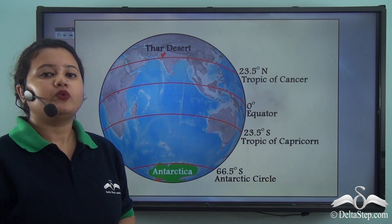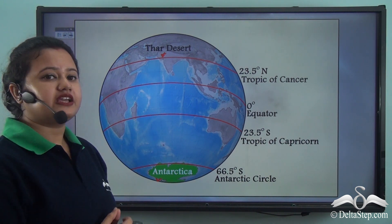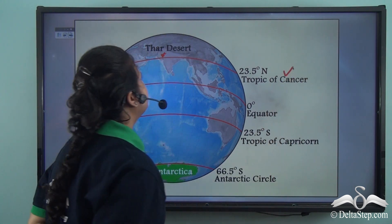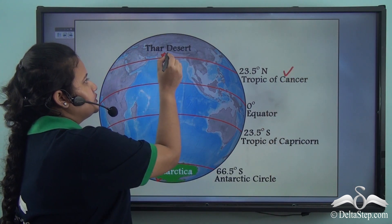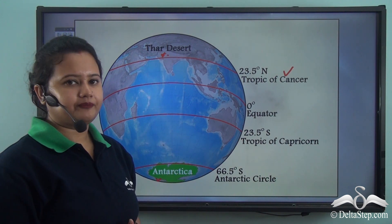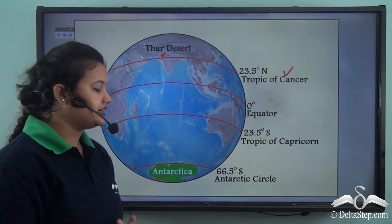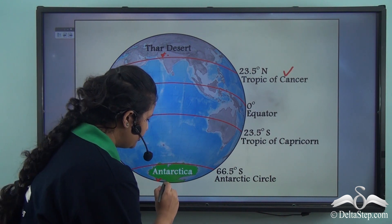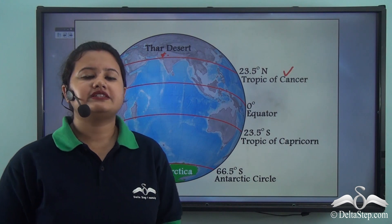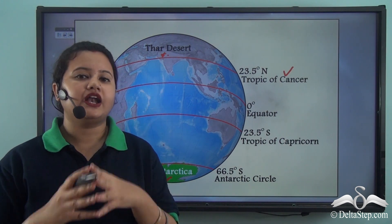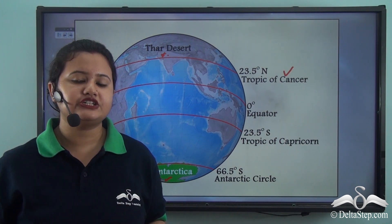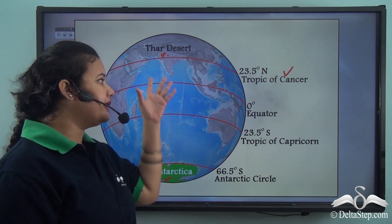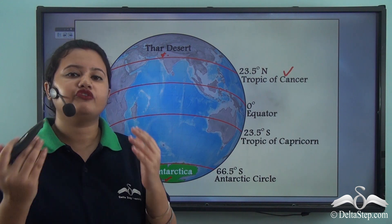Looking at this globe, we can see that Thar Desert is located near the Tropic of Cancer — that is, Thar Desert is located near the tropical zone. While Antarctica, as we can see from the globe, is situated in the polar region. Since these two places are located in different latitudinal zones, the amount of sun's heat received by these two places also varies.